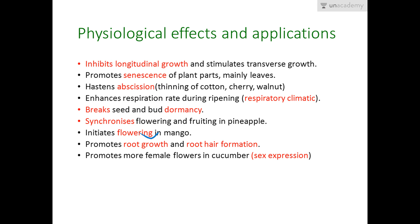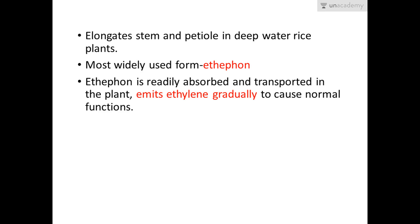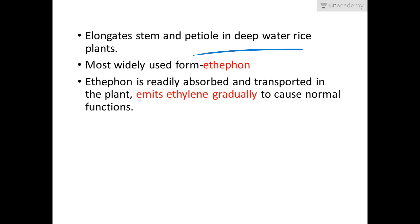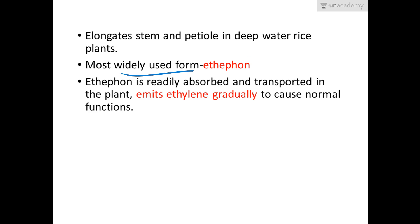Ethylene also promotes elongation of stem and petiole in deep water rice plants — both stem and petiole elongation in submerged and partially submerged aquatic plants is promoted by ethylene. The deep water rice plant is a classic NCERT example of this effect.